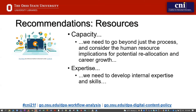To expand our capacity to adequately handle our backlog, new projects, and day-to-day work, as well as begin to re-engineer our processes for efficiency, effectiveness, and equity, we need to go beyond just the process and consider the human resource implications for potential reallocation and career growth. University Libraries has deficits in expertise capacity across under-resourced areas for archival processing, processing born digital and audiovisual content, copyright risk assessment, metadata creation and remediation, and process and project management. It needs to develop internal expertise and skills related to these activities, which can be accomplished in conjunction with process re-engineering, position reimagining and reallocation, and targeted training and mentoring.